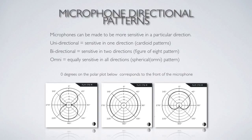When we talk about polar patterns, we're referring to charts that measure sensitivity in space. We're looking at two-dimensional representations, but we're dealing in a three-dimensional world — these shapes come out of the page. In the case of the omni, it's a sphere, not a circle. The same is true of the cardioid heart shape and the bidirectional figure-eight.